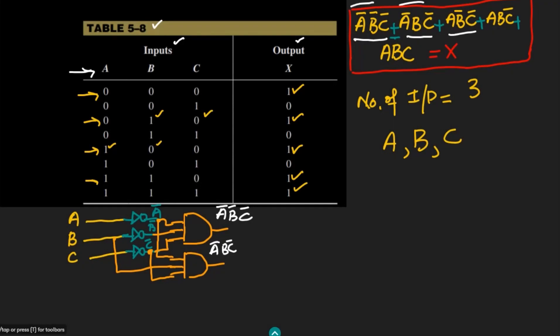For the third AND gate, I implement A B complement C complement. I have three inputs: A is uncomplemented so it is taken directly, while B complement and C complement are taken from the inverter outputs. The output of this AND gate is A B complement C complement.